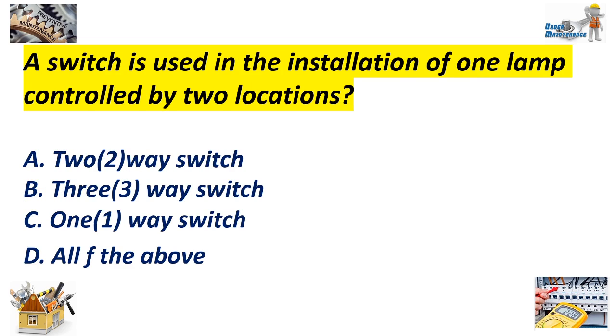A switch used in installation of one lamp controlled by two locations: A. Two-way switch, B. Three-way switch, C. One-way switch, D. All of the above. Answer: B, Three-way switch.